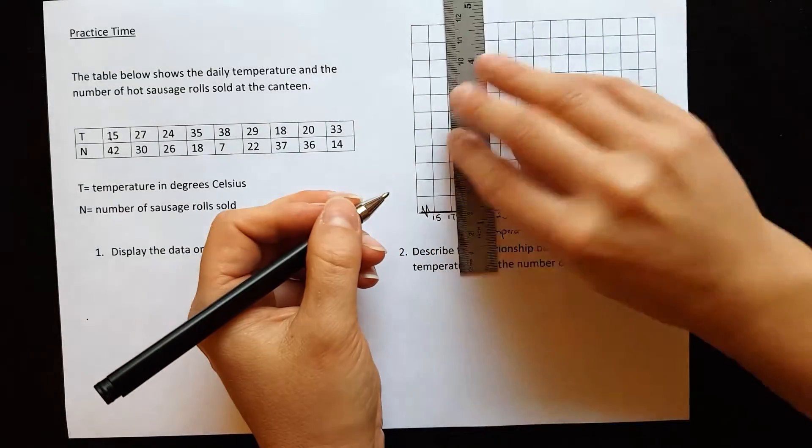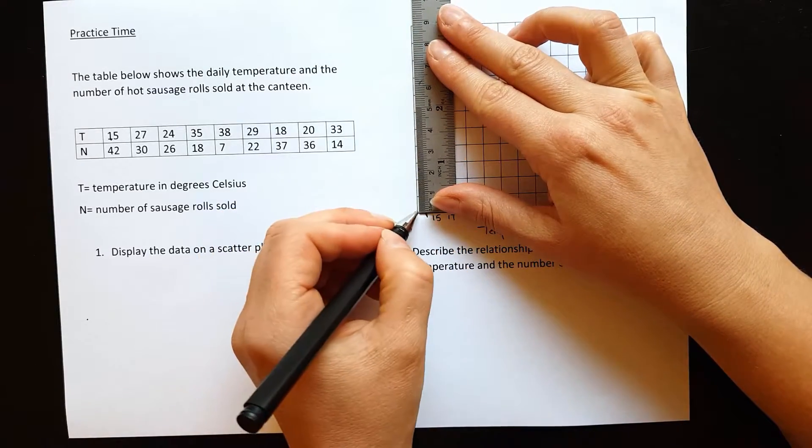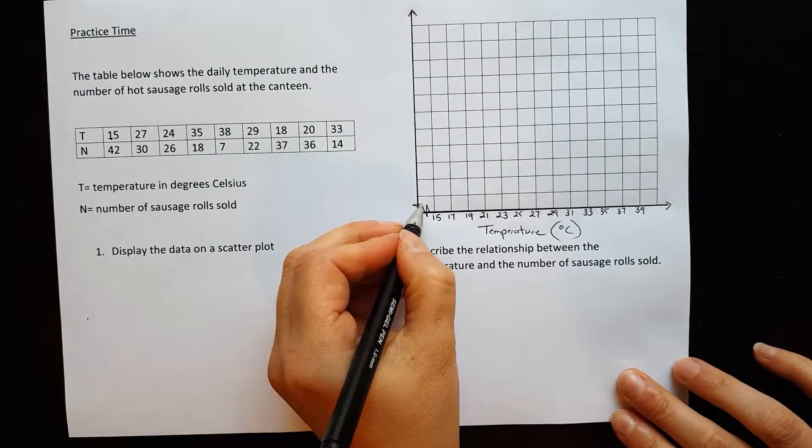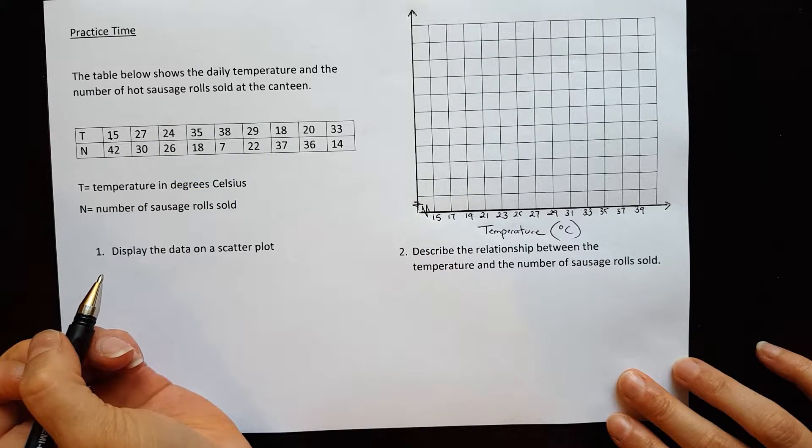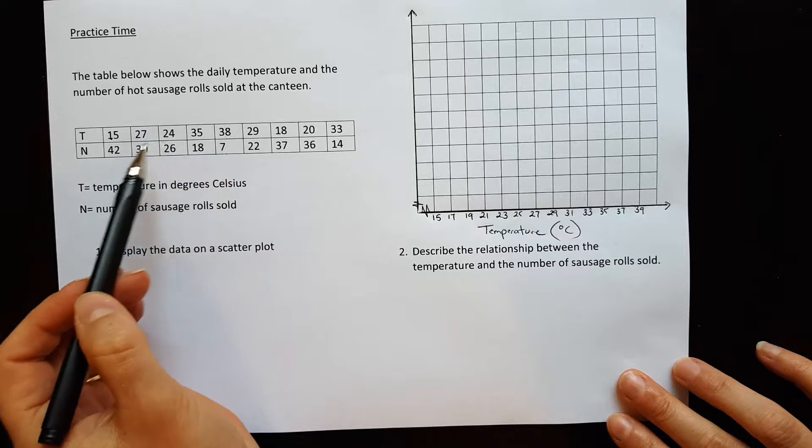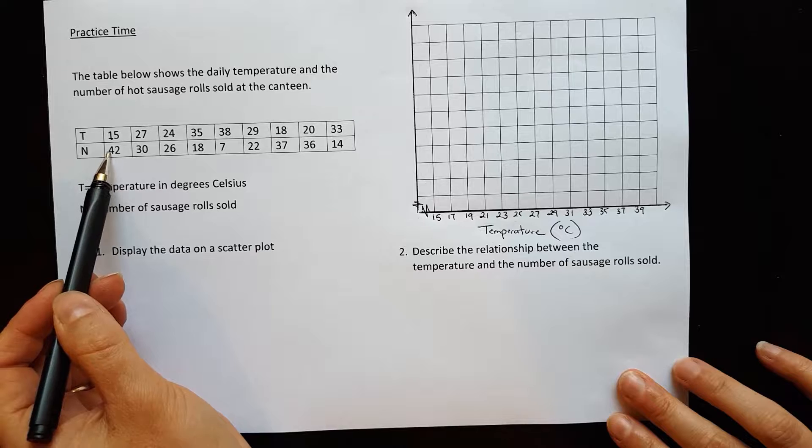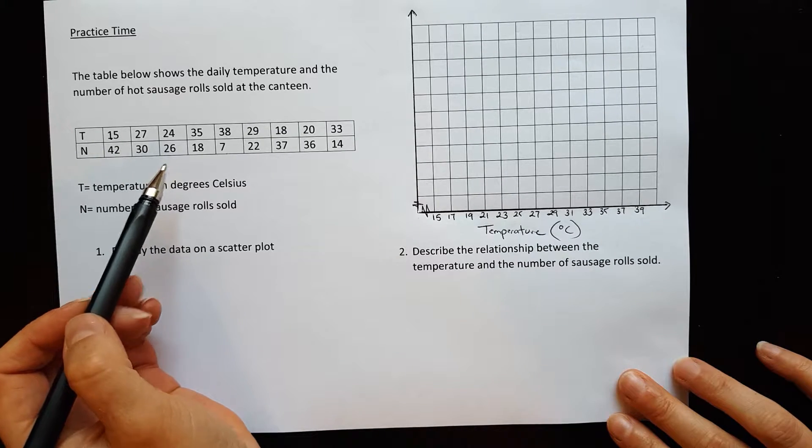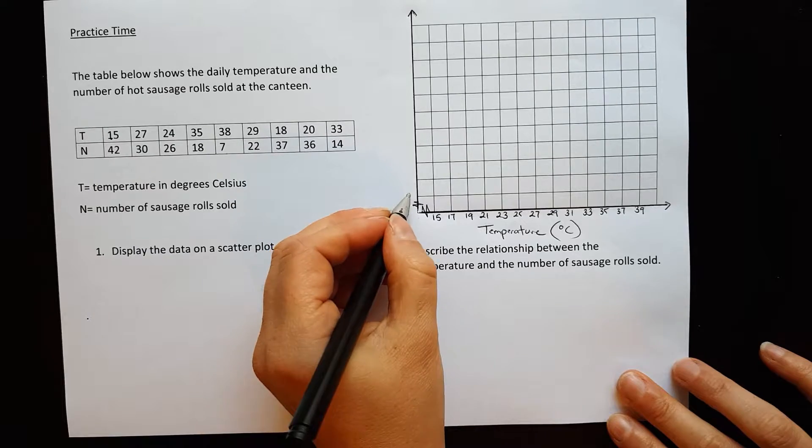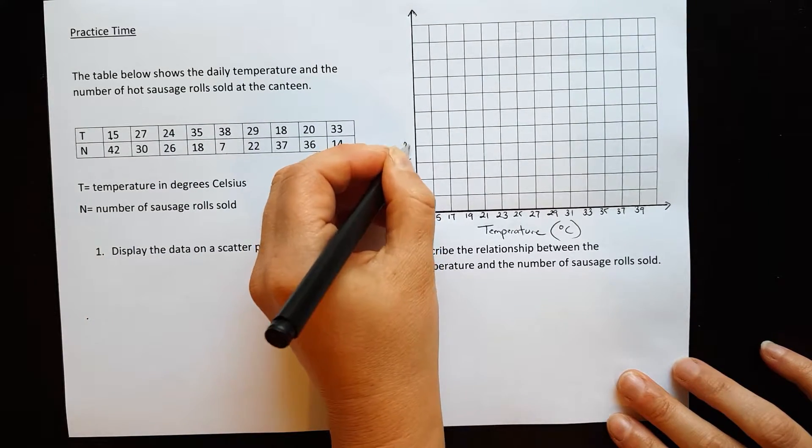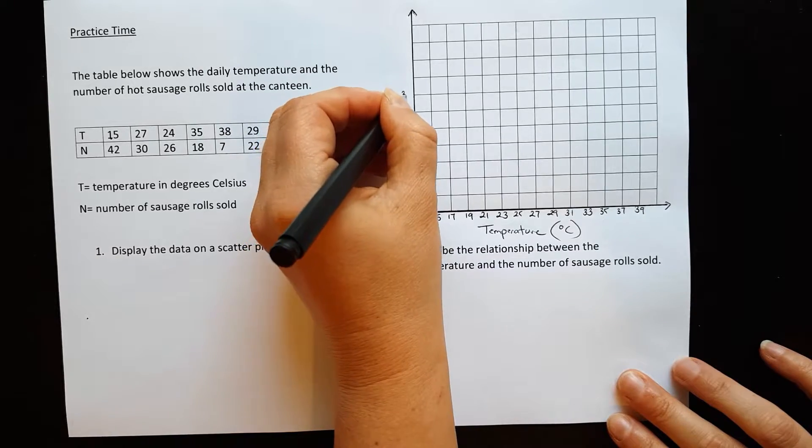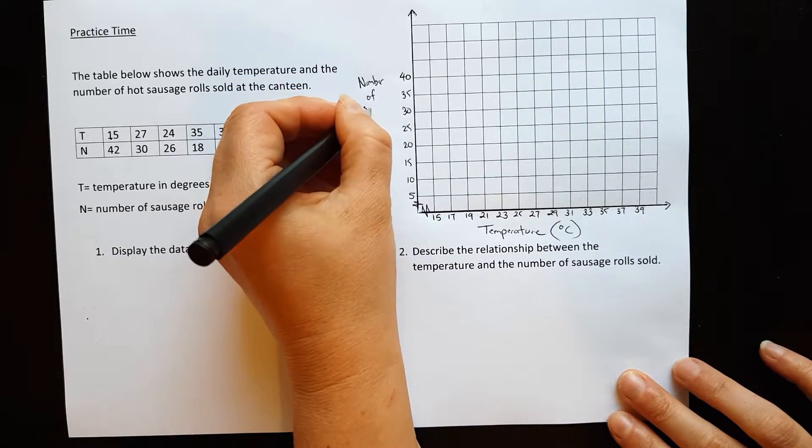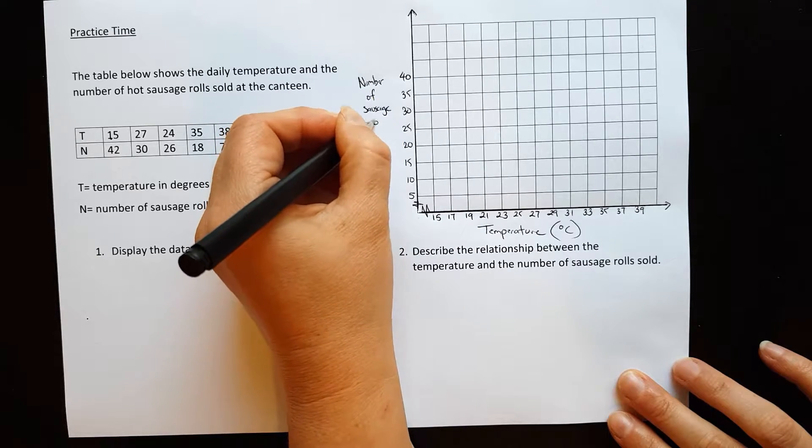On the vertical axis, we have the number of sausage rolls that are sold at the canteen. The smallest number is seven. Let's do our zigzag. What have we got from seven to 42 is the highest? So that's like a 35 space gap. So why don't we go up by fives? Now starting at seven is probably strange, let's start at five instead. So 5, 10, 15, 20. All right, there we go. And that can be our number of sausage rolls sold.